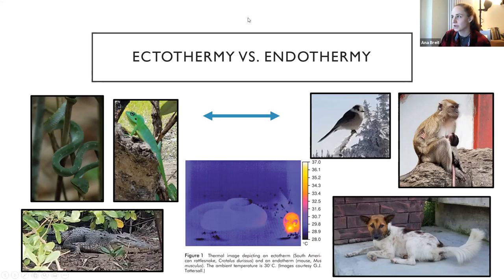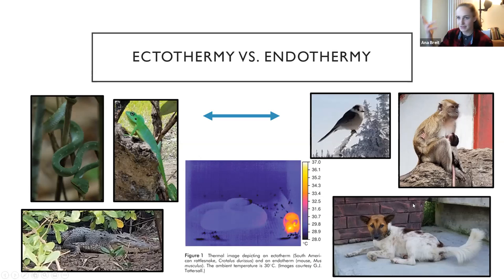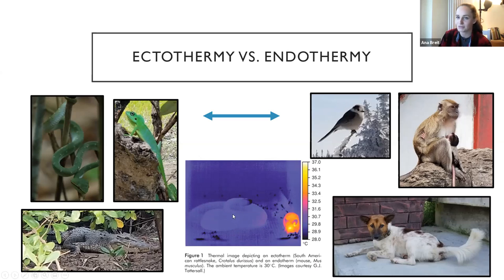Endotherms are able to use metabolic heat production — they use metabolism to regulate their body temperature. Birds and mammals are the endotherms we normally talk about. This thermal image shows a rattlesnake whose temperature matches ambient temperature — it's not using any energy to maintain a body temperature — whereas a mouse is very warm because it uses its own metabolism to raise its body temperature.